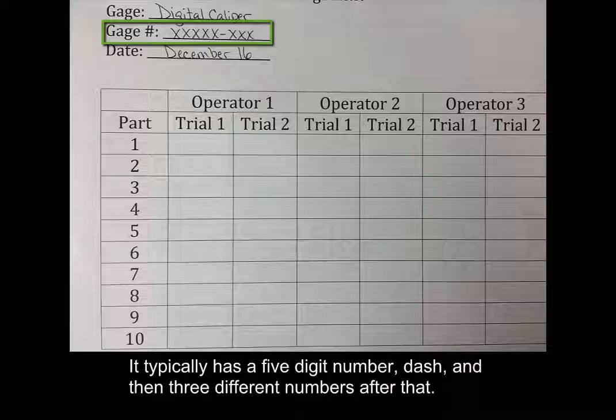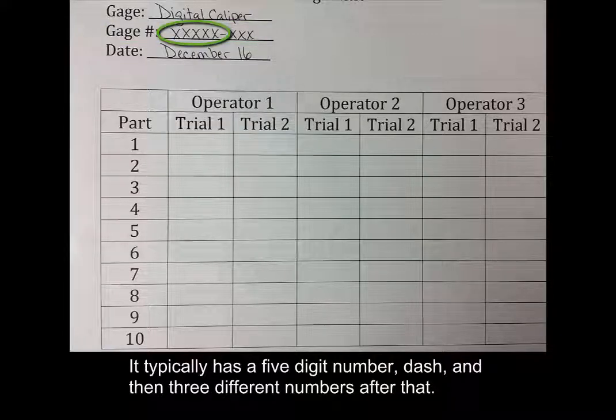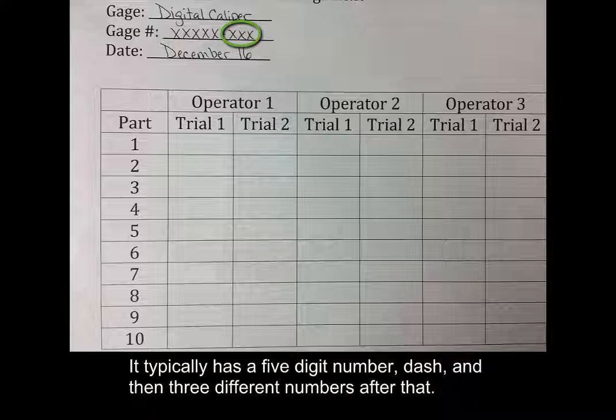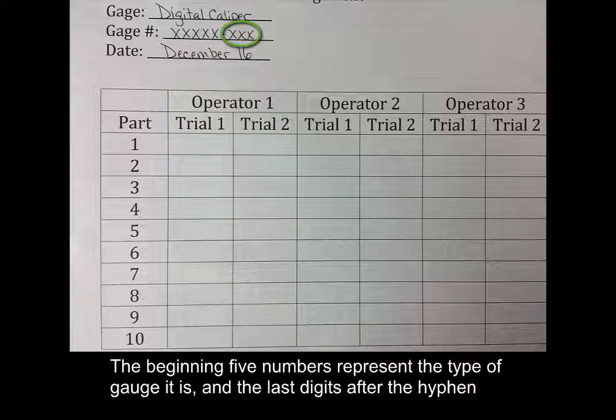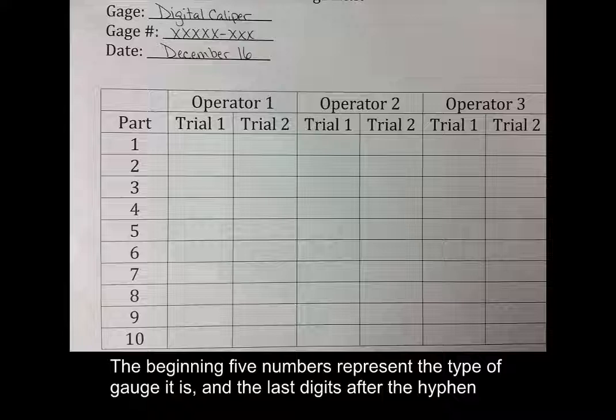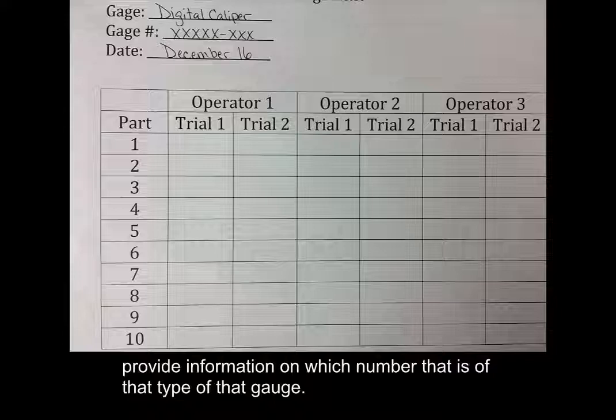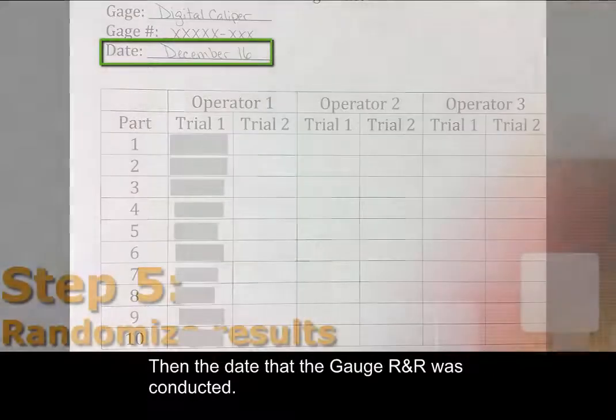Dash, and then 3 different numbers after that. The beginning 5 numbers represent the type of gauge that it is, and the last digits after the hyphen provide information on which number that is of that type of gauge, and then the date that the gauge R&R was conducted.